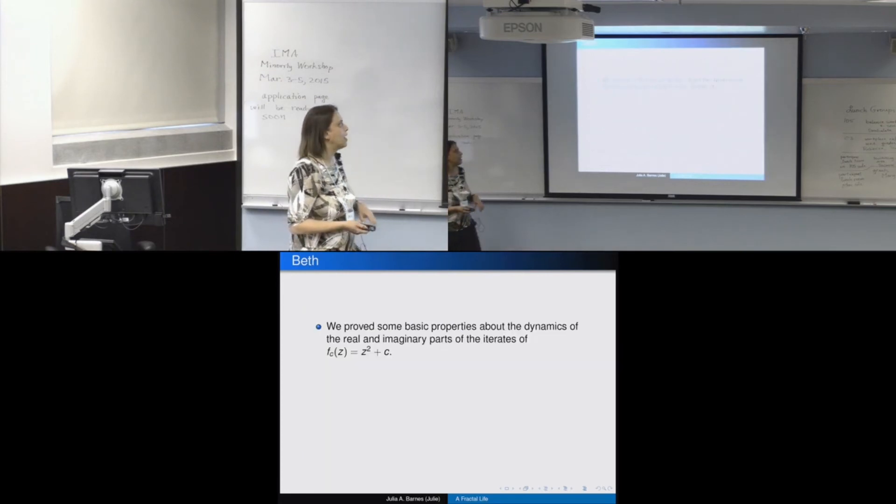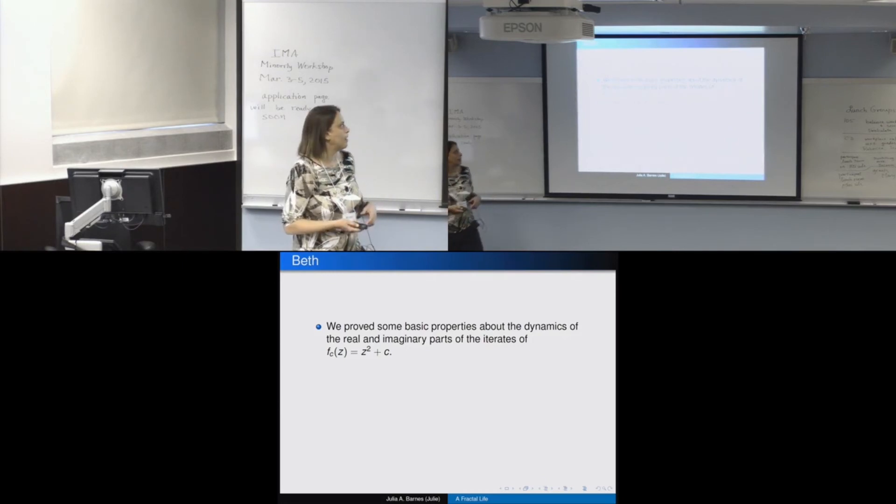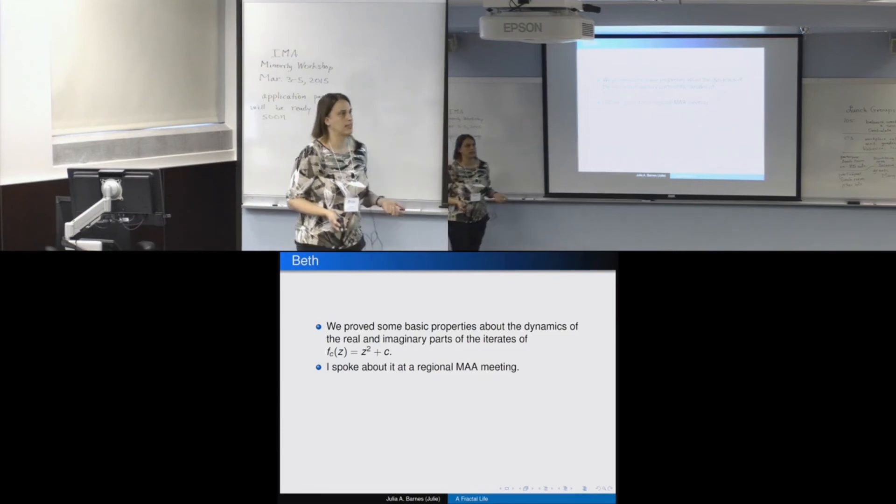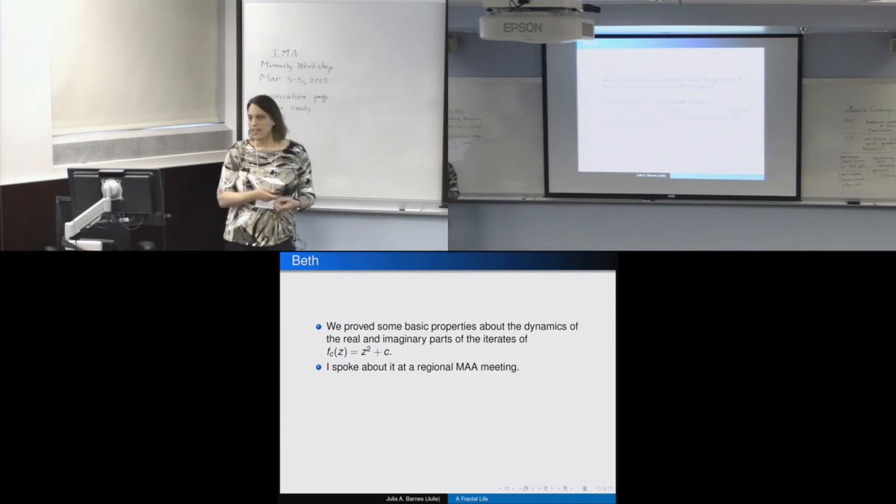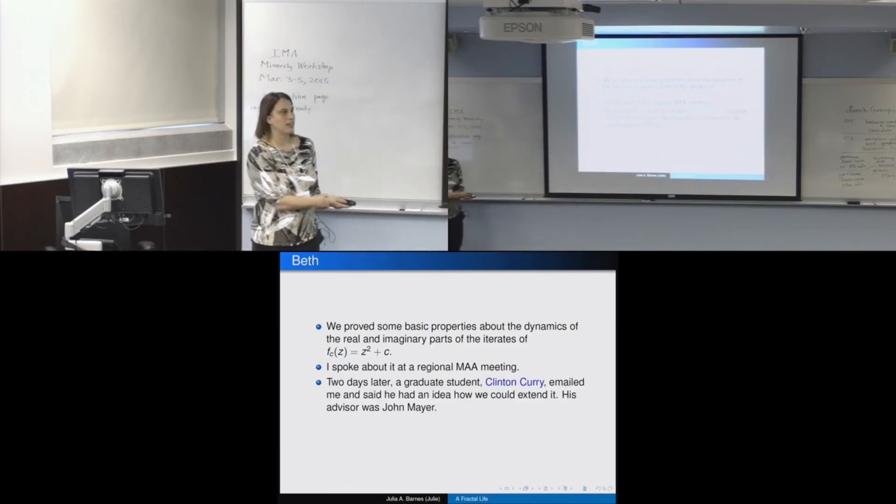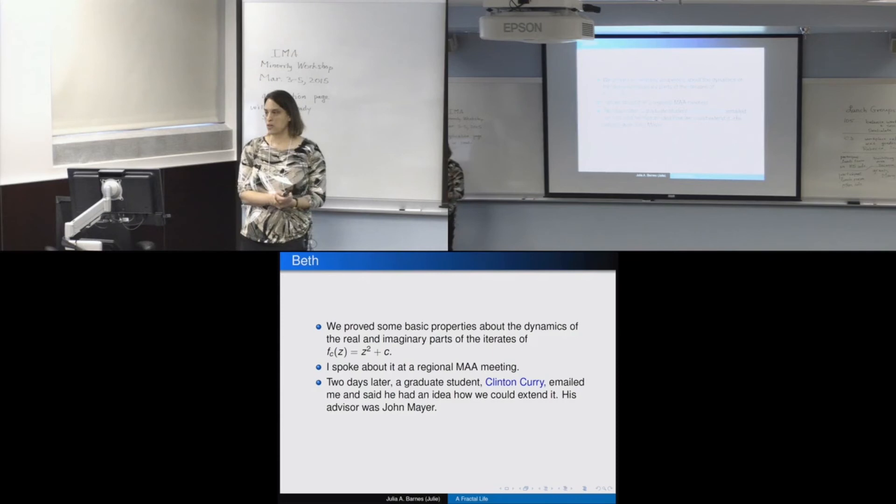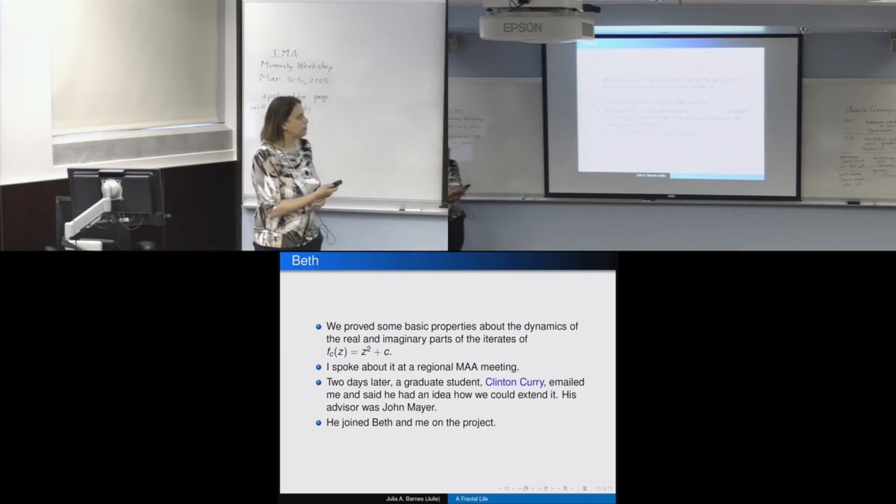So we started asking questions about the pictures and what they mean. And we ended up proving some basic properties for z squared plus c, so the quadratics. And I presented it at an MAA meeting, because we had some results. I can't say they were deep, but they were results. And two days later, a graduate student emailed me and said, you know, I think I know how to extend that. And we're like, great. Well, actually, he was one of John Meyer's students. John Meyer is the guy who asked for a preprint from me a long time ago. So we invited them to join us.